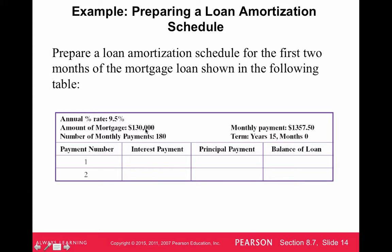For the amortization example, the mortgage is $130,000 at an interest rate of 9.5% — much higher than normal — on a 15-year loan, with a monthly payment of $1,357.50. We want to see how much of each monthly payment goes toward interest versus principal.